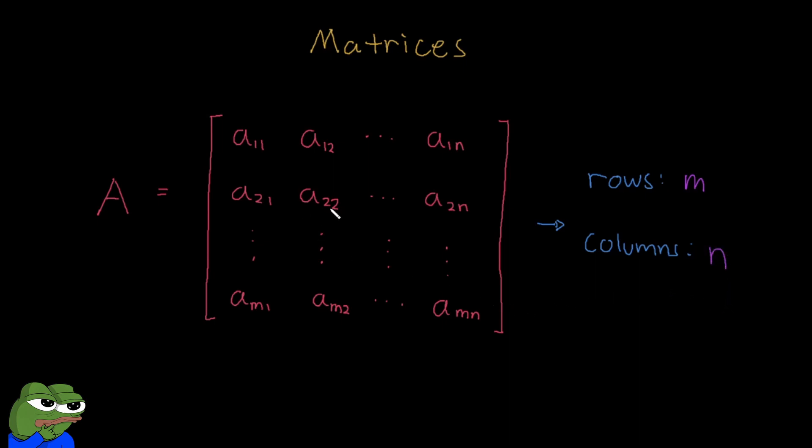What's important to note is how I represent these elements. Earlier, they were numbers, but now it's in this notation. So A is just an arbitrary representation of matrix A, but these subscripts are what's important.